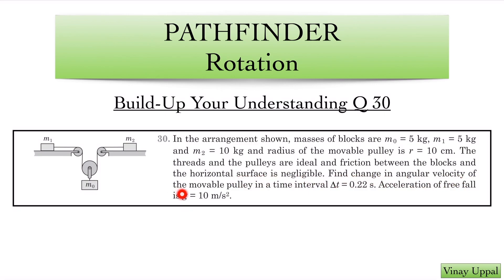Find the change in angular velocity of the movable pulley in a time interval 0.22 seconds. This is the time interval in which we need to find the change in angular velocity. If we can find the angular acceleration of the movable pulley, then we will simply get the angular velocity by multiplying angular acceleration with the time interval. Let's take a look at how we can solve this in the fastest possible manner without any need for simultaneous equations.